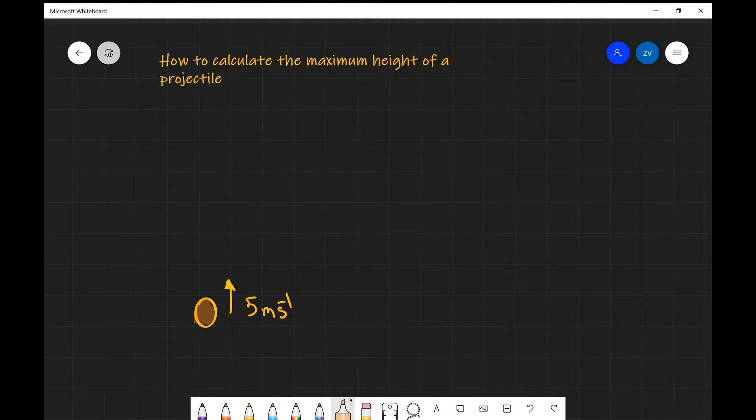What we're going to be discussing today is calculating the maximum height of a projectile. Now in order to answer this question, let's imagine that we have a projectile which is fired directly upwards at 5 meters per second.